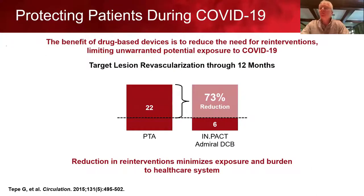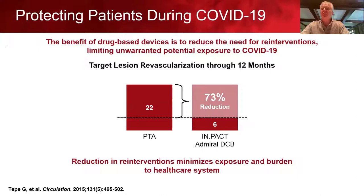During COVID-19, we're really trying to keep patients out of the hospital, so it's important to use interventions that reduce the need for repeat procedures. The Impact Admiral DCB had a 73% reduction in one-year re-intervention rates. This is a good strategy to keep patients out of the hospital even with complex superficial femoral artery disease.